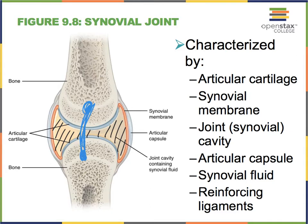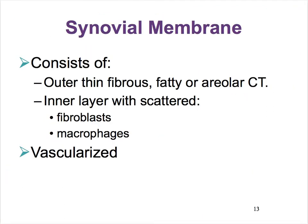Or maybe even within the joint cavity—like we see in the knee joint—we might see crossing ligaments. The synovial membrane surrounding the synovial cavity, except where there is articular cartilage, is a two-layered membrane with an outer layer that has fibers in it.